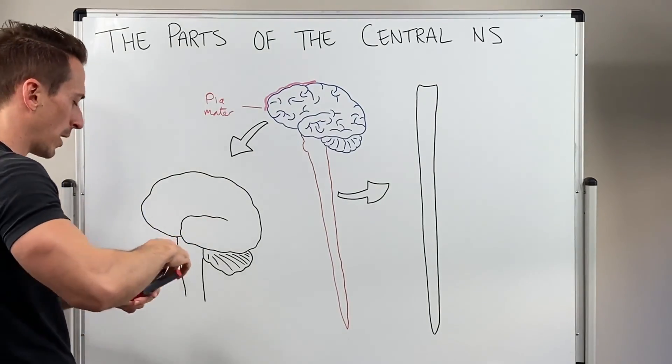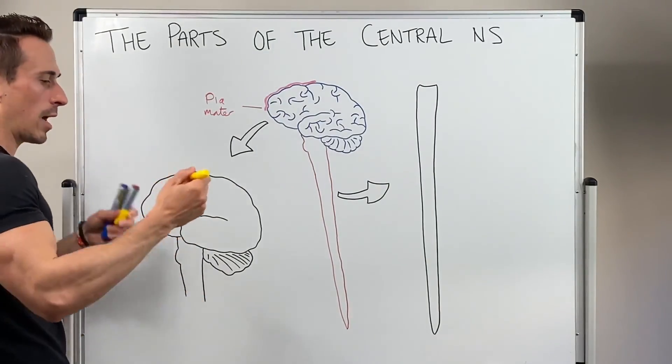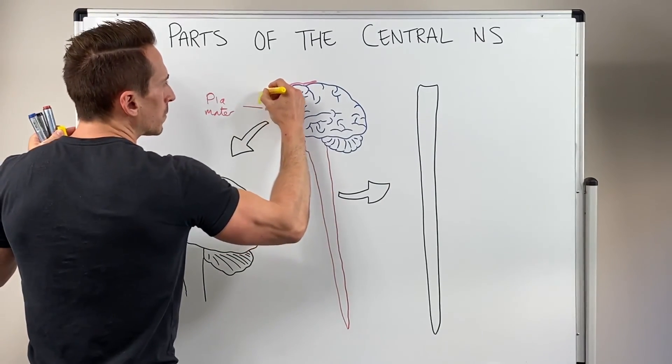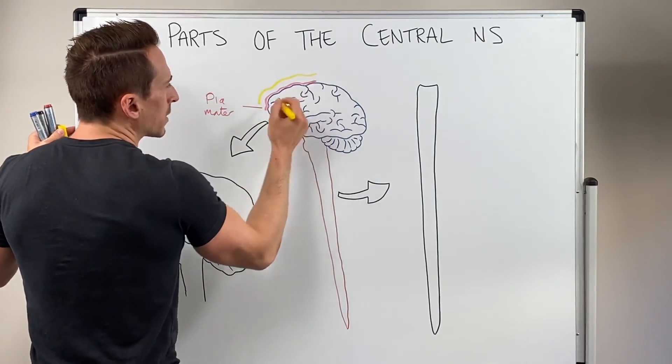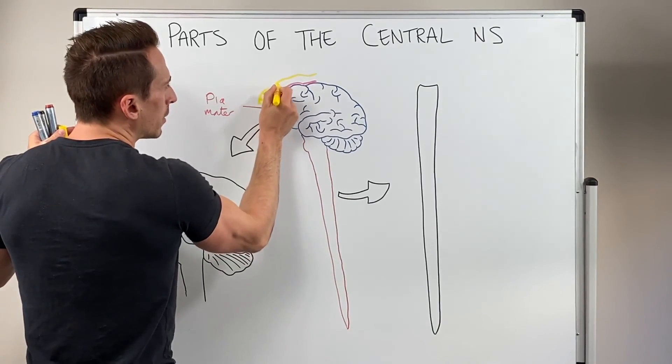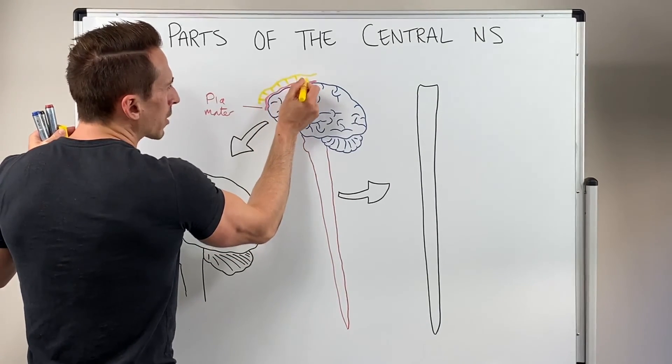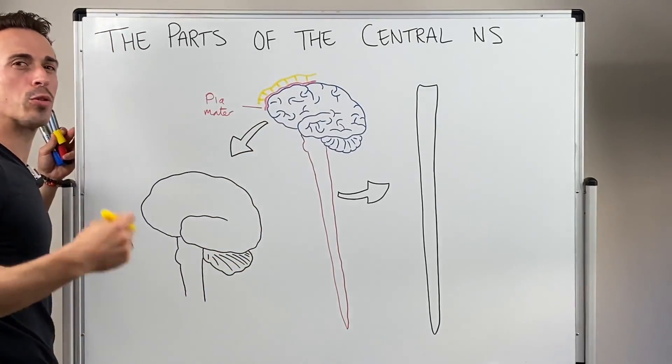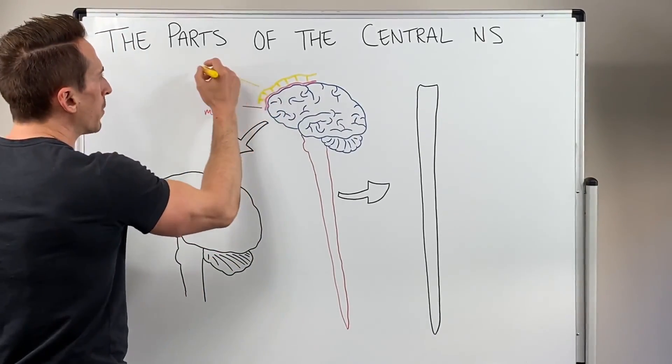On top of the pia mater, we've got another layer that has these projections down to the pia mater that look a little bit like a spider's web. And this is called the arachnoid mater or spider mother.